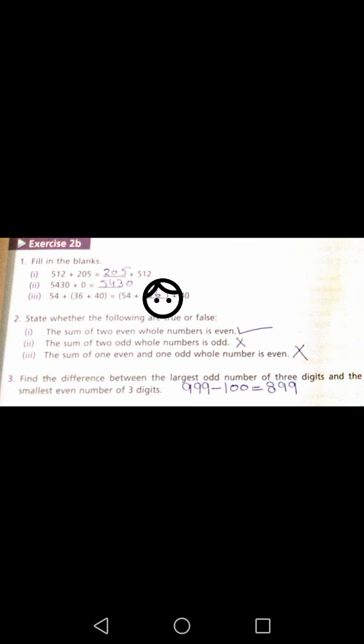Question number 1. Fill in the blanks. 512 plus 205 is equals to dash plus 512. You should check that this side there are 2 numbers given, but this side there is a number missing, that is 205.